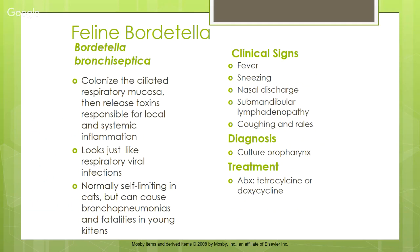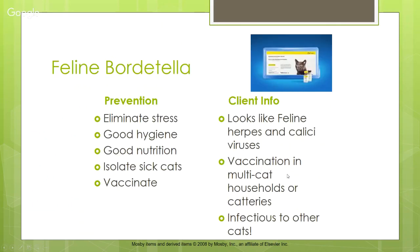If we can culture the oropharynx we can get a diagnosis. Treatment is tetracycline or doxycycline. Prevention: Bordetella is more common in multi-cat households or catteries. Good hygiene, good nutrition, isolating sick cats, and vaccination are key. Tell clients it looks like feline herpes and calicivirus, which can be more chronic and in some cases more deadly.